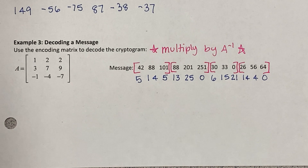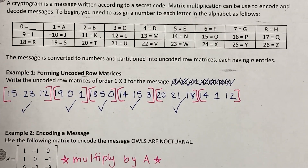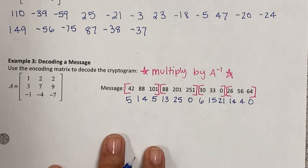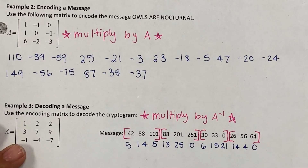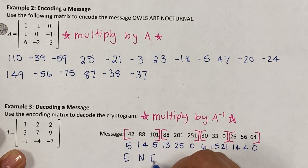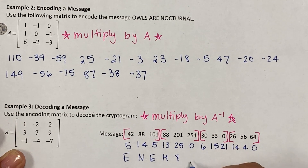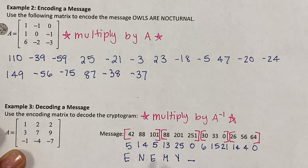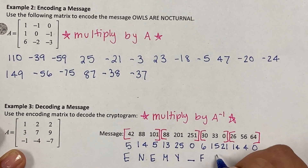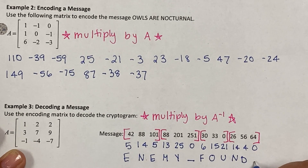Now that I have decoded all the numbers, I look back at what each number represents. 5 is E, 14 is N, 5 is E, 13 is M, 25 is Y, 0 is a space — so I have 'ENEMY.' Continuing: 6 is F, 15 is O, 21 is U, 14 is N, 4 is D, and 0 is a space. The decoded message is 'ENEMY FOUND.'